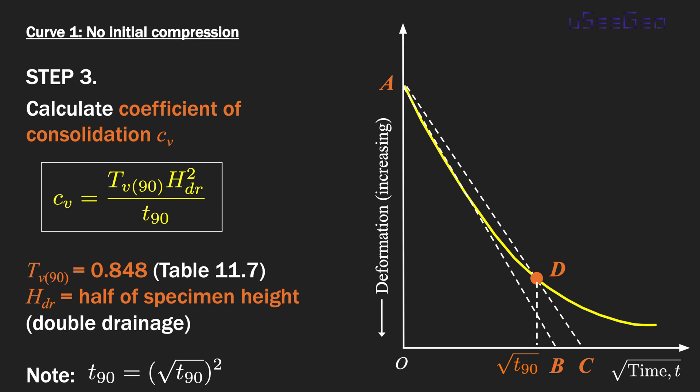HDR is the drainage distance or the maximum drainage path. In a 1D consolidation test, HDR equals half of the specimen height because you have double drainage. Notice that in this calculation, the t₉₀ value we use is actually the square of the x-axis value you read from the curve, because you plot time in square root of time. So that's the first curve where you have no initial compression.